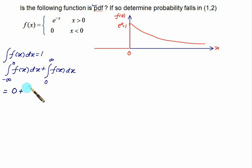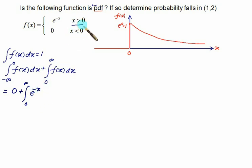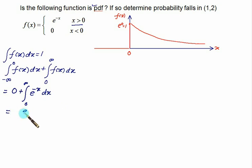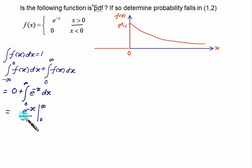For x greater than 0, we integrate e to the power minus x from 0 to infinity. The integral of e^(-x) is minus e^(-x), evaluated from 0 to infinity, and this answer is 1. Since the area equals 1, this is a valid PDF.